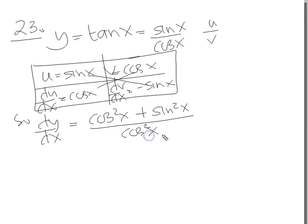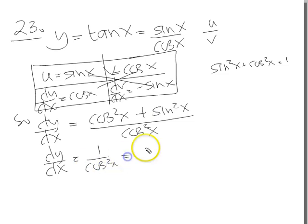Sin²x plus cos²x is a trig identity which equals 1, so we can replace that by 1. So we have 1 over cos²x. Now, that can be written as (1/cos x)², and 1 over cos is sec x, so we can put the squared there.